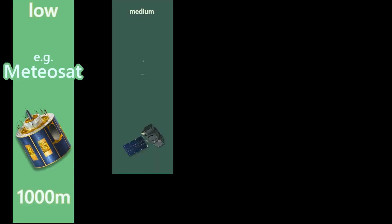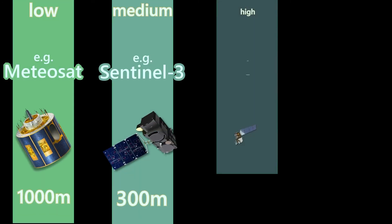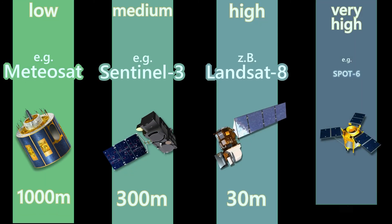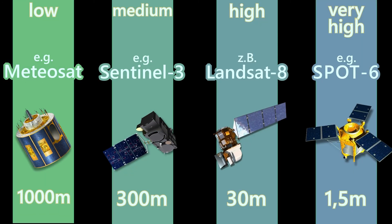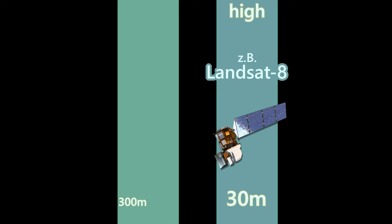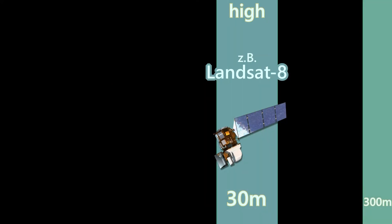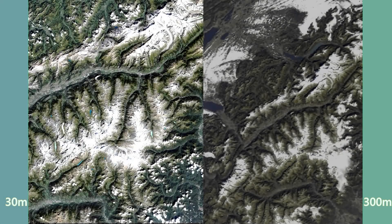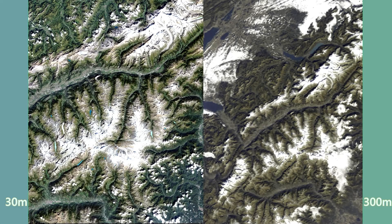We make a distinction between low, medium, high, or very high spatial resolution. If we compare the following images, we can see what this distinction means in practice. In the left image, the spatial resolution is 30 meters, and in the right image, it is 300 meters.